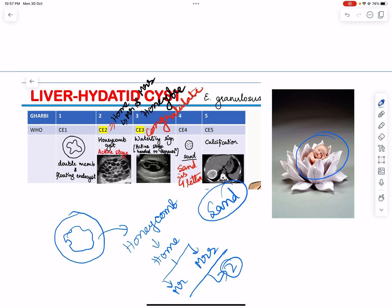Now in fourth stage we have sand, and now sand has four glitter, so this can be used for fourth stage. And in final stage we have calcification.